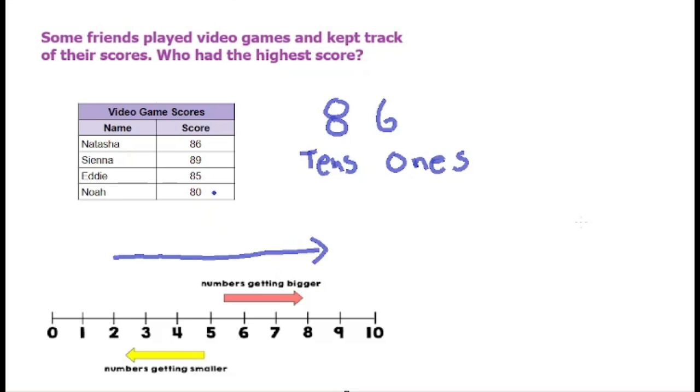And so we have the numbers 6, 9, 5, 0. So 0, 5, 6, 9. So the biggest one is here because this is the furthest on the number line.